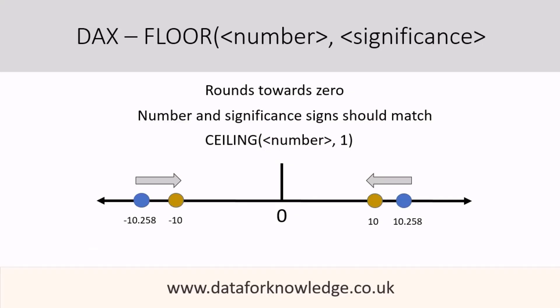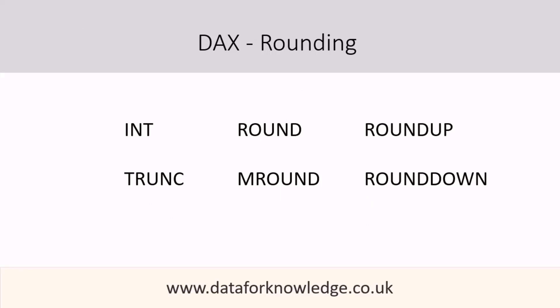In summary for floor, we are rounding towards zero. The floor is dependent on the number in the significance section of the code, and both the number and the significance signs must match — they should both be positive or both be negative. There are other DAX expressions you can use when rounding figures, for example int, trunc, round, mround, roundup, and rounddown, and I will cover these in separate videos.